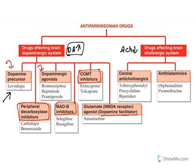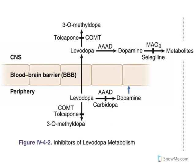Dopamine precursor is levodopa. Dopamine agonists: bromocriptine, ropinirole, pramipexole. Catechol-O-methyltransferase inhibitors: entacapone and tolcapone. Monoamine oxidase inhibitors: selegiline, rasagiline. Carbidopa and benserazide are decarboxylase inhibitors. Amantadine is a dopamine facilitator. Let us see about these drugs.